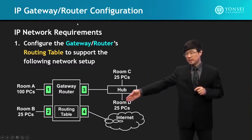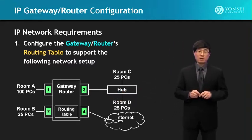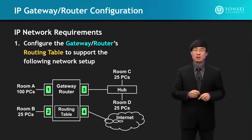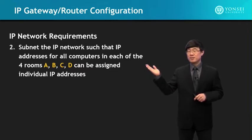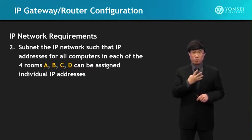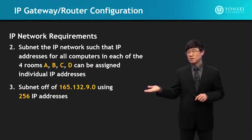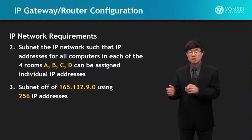First, we're going to subnet the IP network. We have four rooms A, B, C, D, and we're going to subnet off of 165.132.9.0, using 256 IP addresses — that's what was given to us by the network administrator. The gateway connects these four rooms and the Internet. Room A has 100 computers connecting to interface 1, room B has 25 computers connecting to interface 2, rooms C and D connected to a hub/switch with 25 each connecting to interface 3, and the Internet connects through interface 4 with address 165.132.15.56 and subnet mask 255.255.255.252.